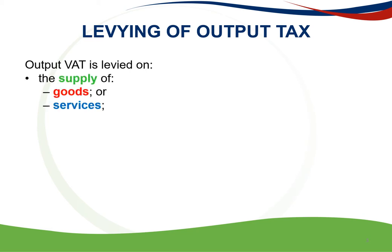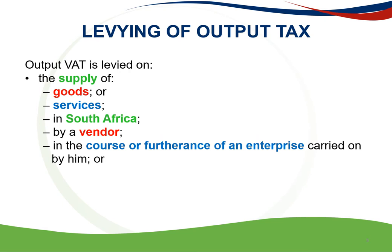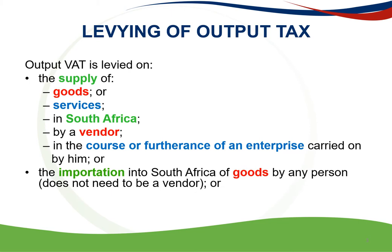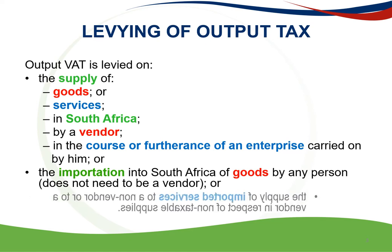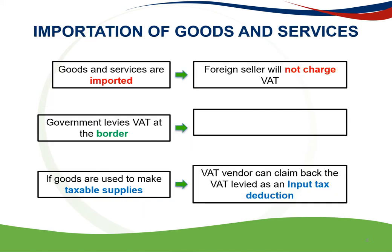Output VAT is levied on the supply of goods or services in South Africa by a vendor in the course or furtherance of an enterprise carried on by him, or the importation into South Africa of goods by any person — it doesn't need to be a vendor — or the supply of imported services to a non-vendor or to a vendor in respect of non-taxable supplies. VAT is levied on the importation of goods and services.